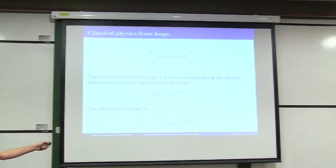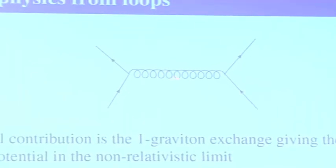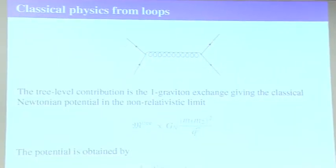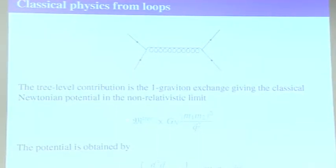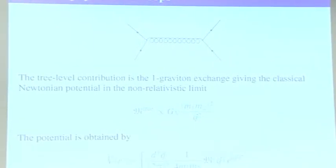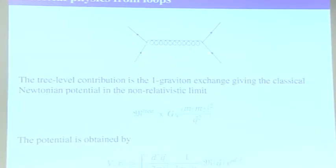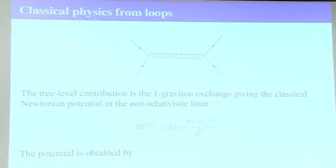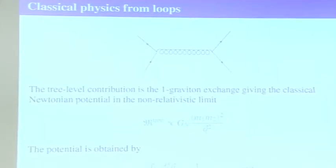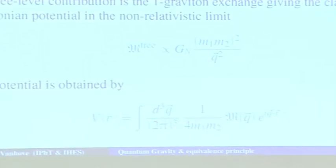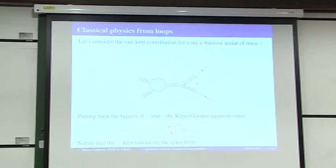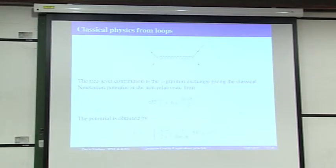From the single graviton exchange — the tree amplitude — you have a 1/Q² pole. When you take the non-relativistic limit with two massive states, you recover, at leading order, Newton's law. In the non-relativistic limit, the stress-energy tensor gives you the mass squared of each massive particle. There's kappa squared at each vertex — kappa squared is Newton's constant — and 1/Q², and then you get the potential by doing the Fourier transform of the momentum transfer in three dimensions, yielding the usual 1/r potential. This is how you get the classical bit from the tree.